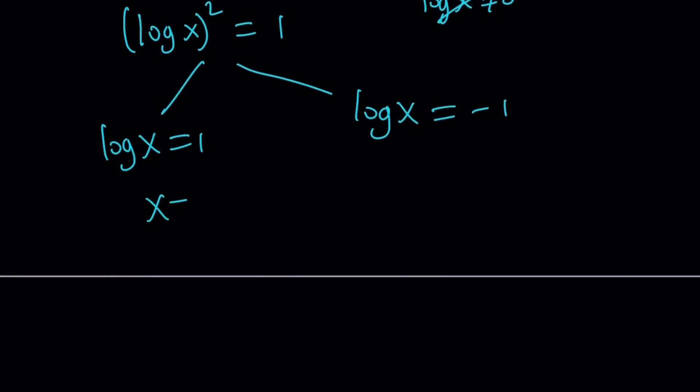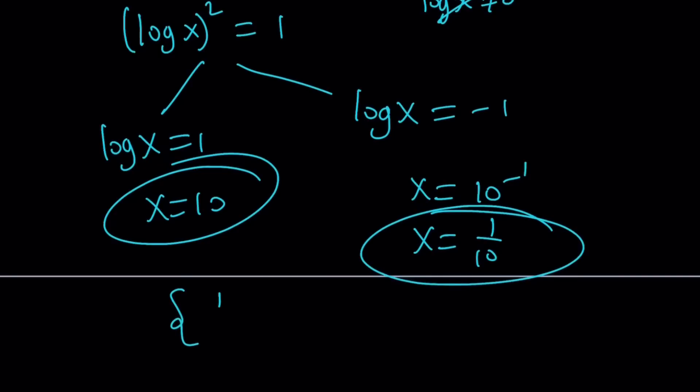Maybe after this if you have some time we're going to try a slightly different method for substitution. x equals 10 and x equals 10 to the power negative 1 which is 1 over 10. So those are the two solutions. You want to write it in a set like this.